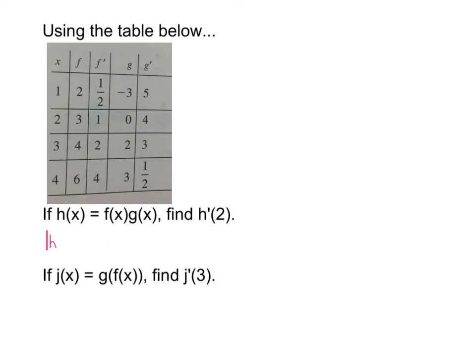h prime of x would be first times derivative of the second plus second times derivative of the first. That's our use of product rule.